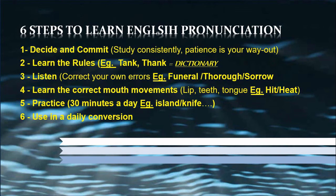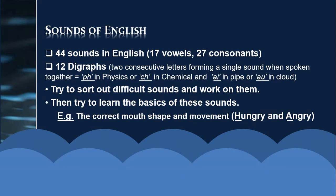Now we come to the second part: the sounds of English. There are 44 sounds in the English language — 17 of them are vowels and 27 are consonants. You need your dictionary to study them. What you learned in school is that there are 26 letters with vowels and consonants, but English has 44 sounds. For this purpose, there are phonetic transcription symbols provided in the dictionary, so you can learn them easily.